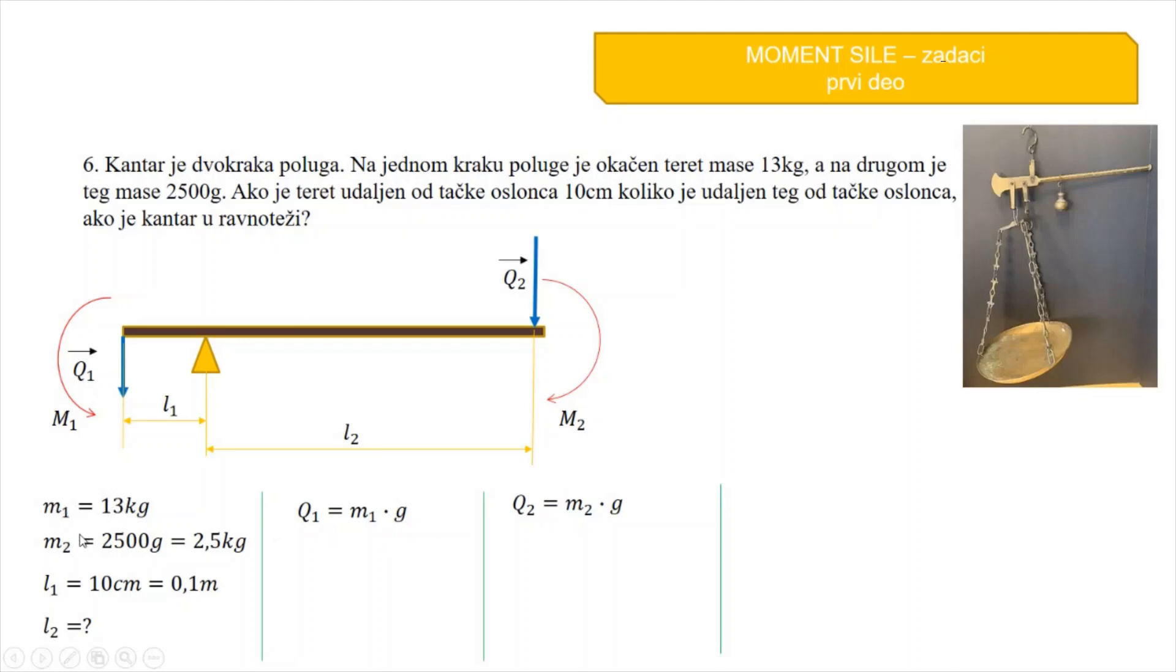Ako imamo date mase, težinu dobijamo kao M puta G. I za teret, i za teg. Ko tereta to će biti, umjesto M1 pišemo 13 kg, umjesto G 10 N kroz kg, i to će biti 130 N. Ovdje, umjesto M2 pišemo 2.5 kg puta 10 N kroz kg, 2.5 puta 10 je 25 kg, i kg se skrati, i ostaje samo N.